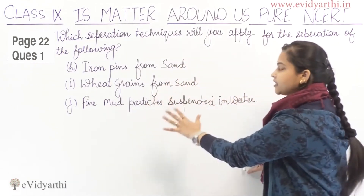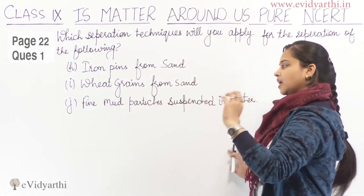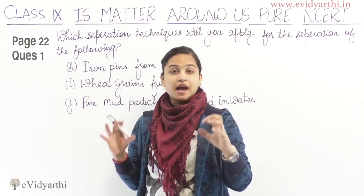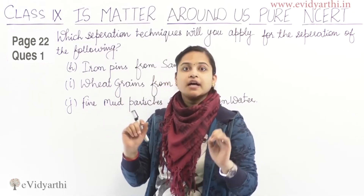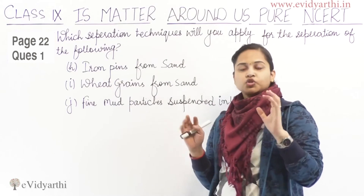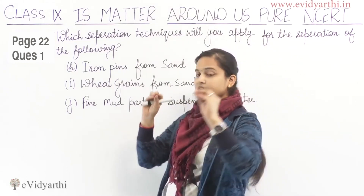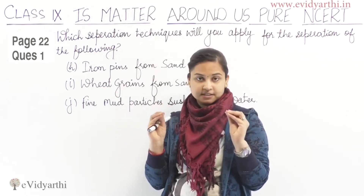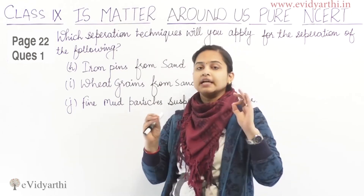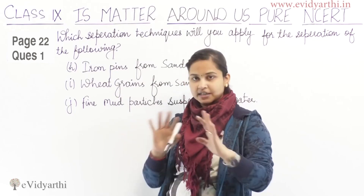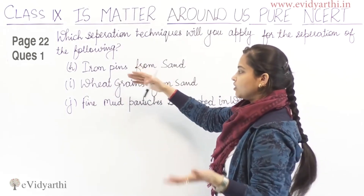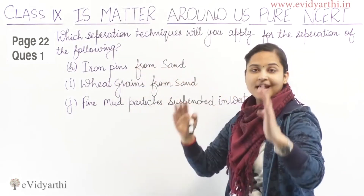Part H: Iron pins from sand. Iron has a very unique property — magnetic property. Iron possesses a magnetic quality, and this is the key characteristic used for separation by the technique known as magnetic separation. So the technique used for separating iron pins from sand is magnetic separation.